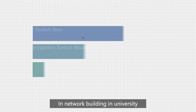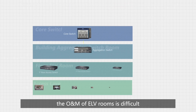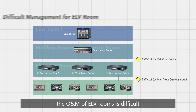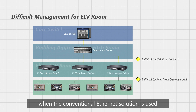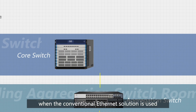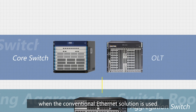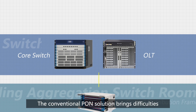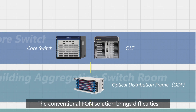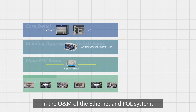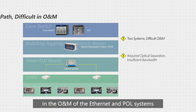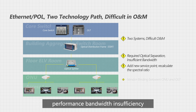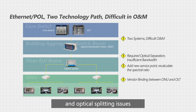In network building in university, the ONM of ELV rooms is difficult when the conventional Ethernet solution is used. The conventional PON solution brings difficulties in the ONM of the Ethernet and POL systems, performance bandwidth insufficiency, and optical splitting issues.